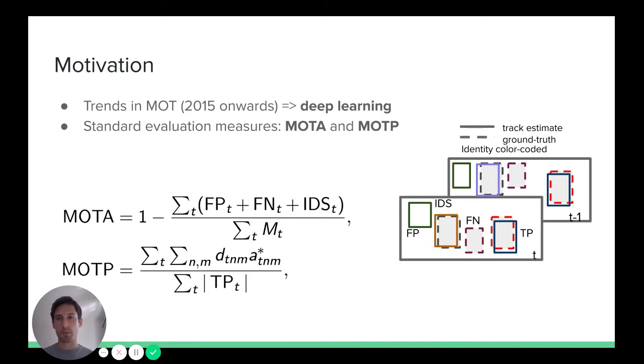Let's shortly recap the evaluation measures that we used for this task. The most widely used measures are MOTA and MOTP. In case of MOTA, multi-object tracking accuracy, we penalize false positives, false negatives, and ID switches. In case of MOTP, we evaluate the overlap between track predictions and ground truth boxes and normalize this by the number of true positives.